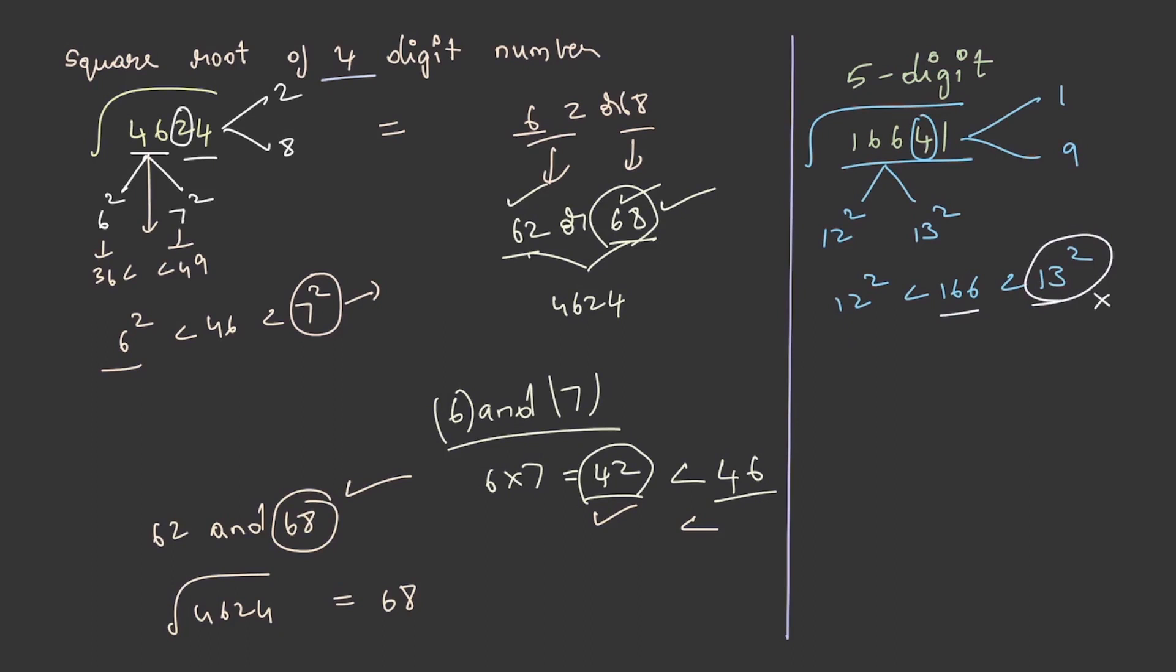As 13² is greater than 166, this cannot be the value. We have already got the units place, that is, it can be either 1 or 9. As 13 is not in our option, we have only 12, so it can be 121 or 129.